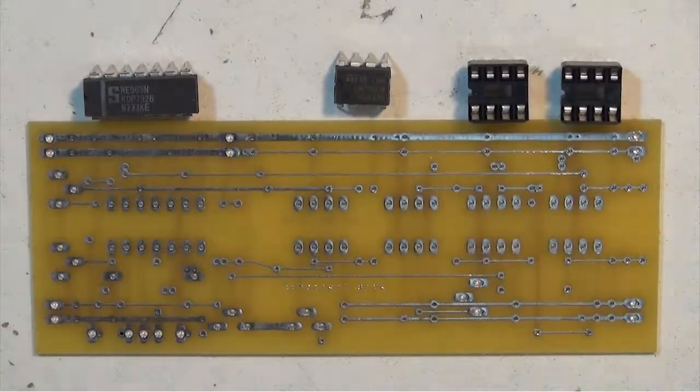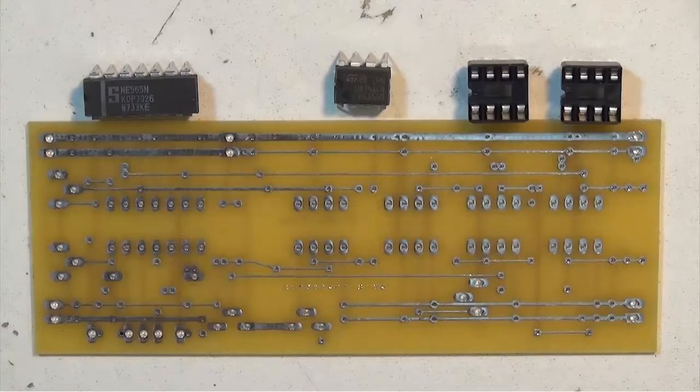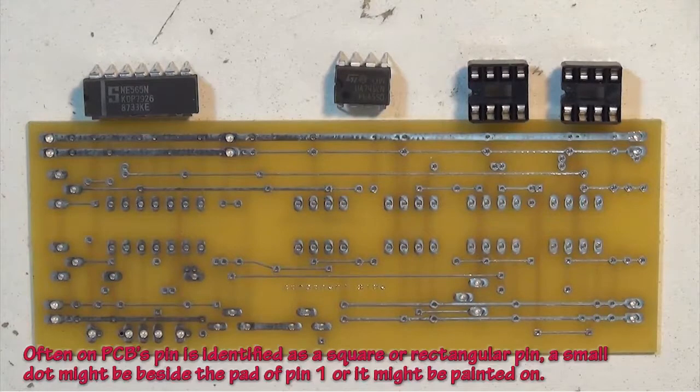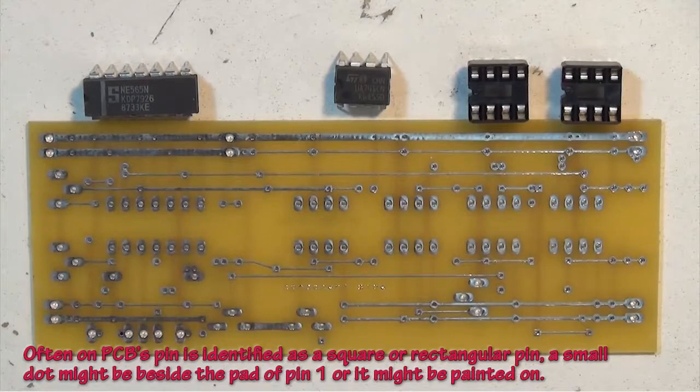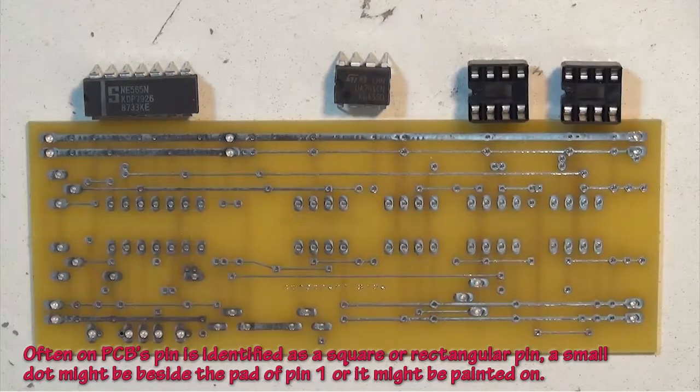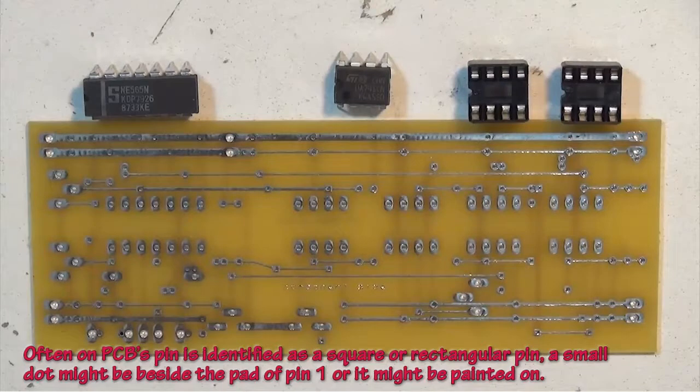When you're installing ICs or IC sockets into a printed circuit board, it's always a good idea to know where pin 1 on the circuit board is and where pin 1 on your IC or IC socket is. If you don't know where it is, there's no point in putting these components on the circuit board.